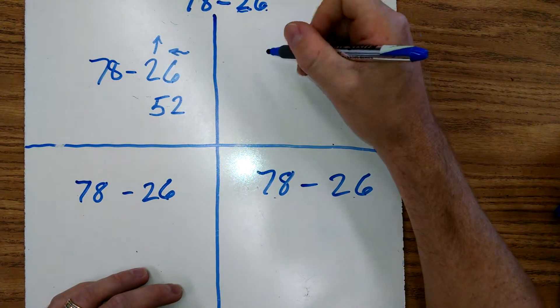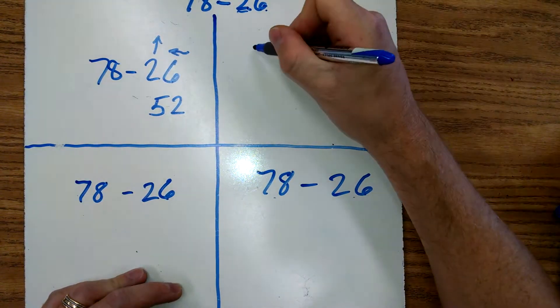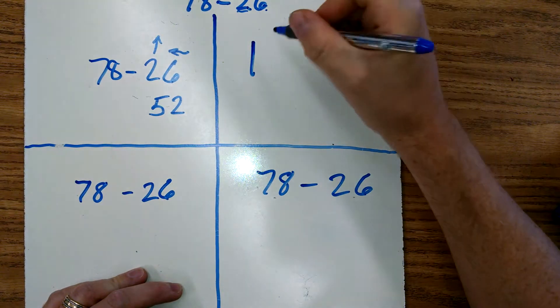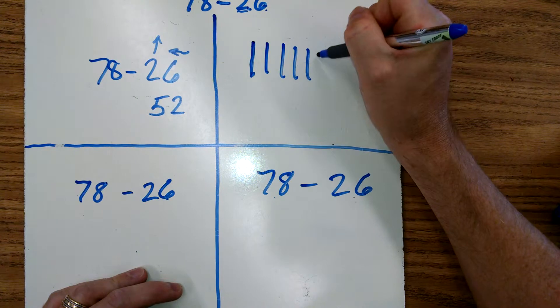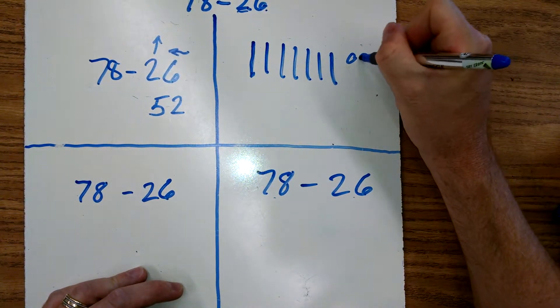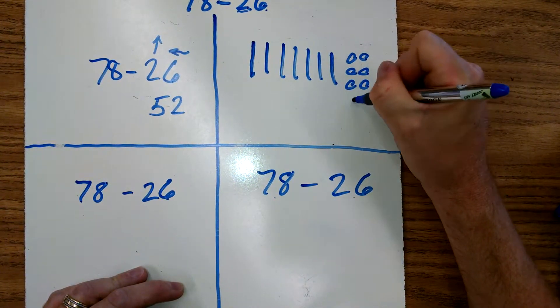The next way I'm going to show you real quick is how to subtract by drawing out a model. So we're going to start by drawing out 78. This is a quick draw, so that stands for a 10. 20, 30, 40, 50, 60, 70. And one, two, three, four, five, six, seven, eight.